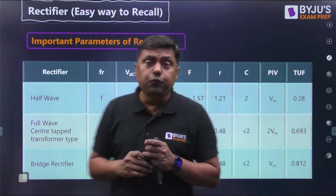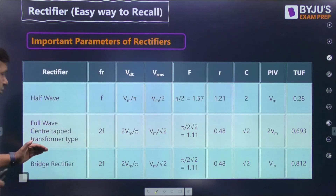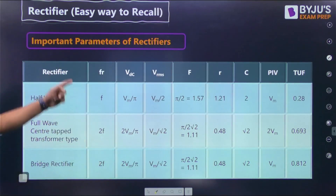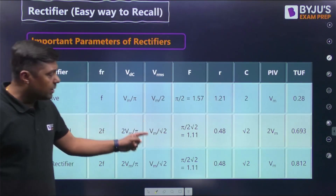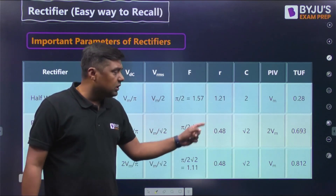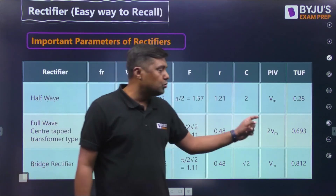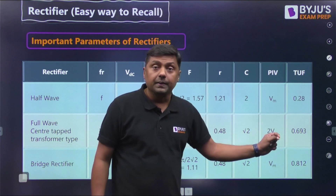For the full wave center tapped transformer type: ripple frequency = 2F; VDC = 2Vm/π; VRMS = Vm/√2; form factor = 1.11; ripple factor = 0.48; crest factor = √2; PIV = 2Vm; and TUF = 0.693.